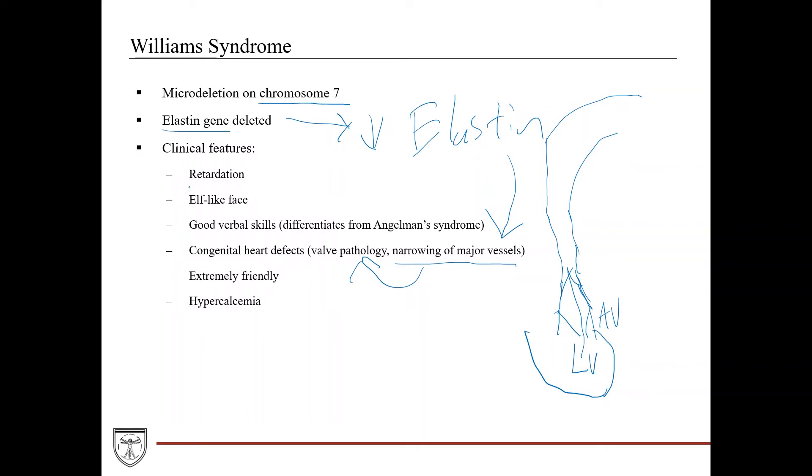These patients will also demonstrate retardation, and they will also have unique facial features, a broad forehead, a short nose, full cheeks. Some people have described this as an elf-like face. These patients, they'll have good verbal skills, they'll be extremely friendly in their demeanor, they'll readily greet strangers, start a conversation.